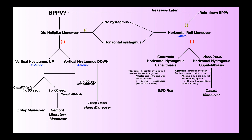Now let's suppose you perform the Dix-Hall-Pike maneuver and the result is negative. Recall that a negative result can either be the reproduction of no nystagmus or the reproduction of horizontal nystagmus. In either case, you're going to go to the second special test, which is called the horizontal roll maneuver or horizontal roll test.